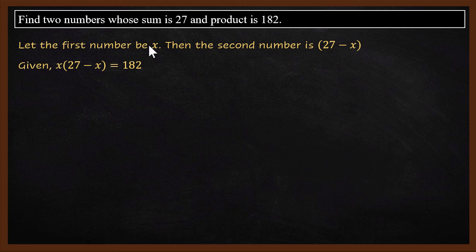Let's start with the first number being x. Let's assume the first number is x. So first number is x, second number is 27 minus x. Why is second number 27 minus x?